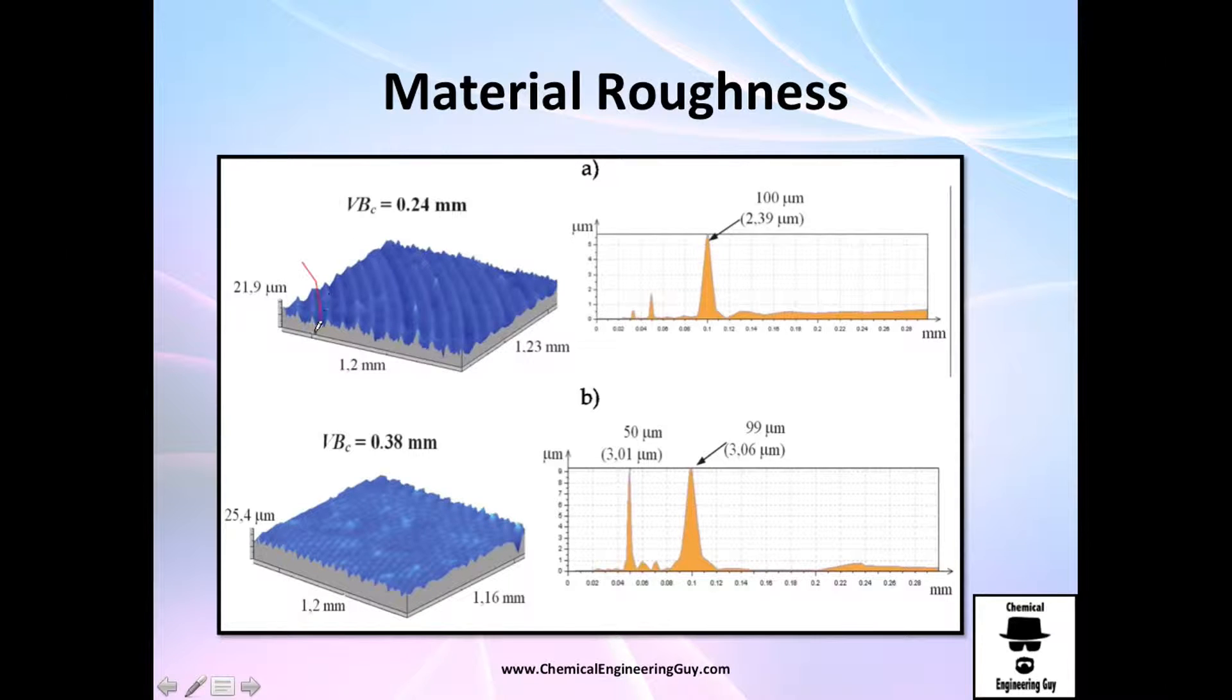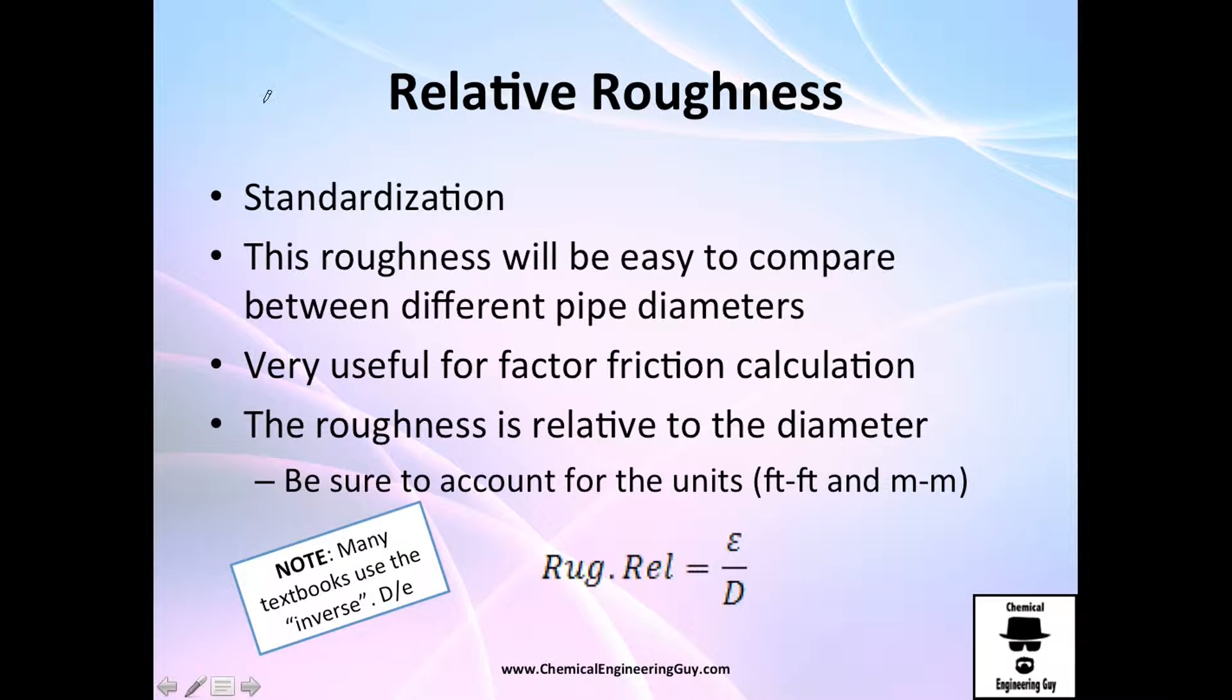The more rough the material, the more friction we are going to have. There are plenty of ways to calculate this. This is just a review. If you want to go deeper, you need to go to AFD2, which is the block in which I introduced you to material roughness.